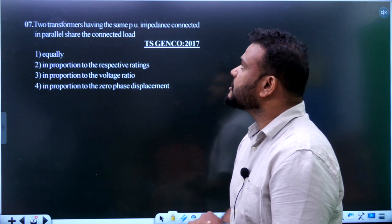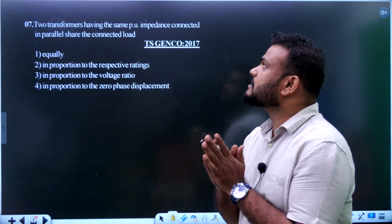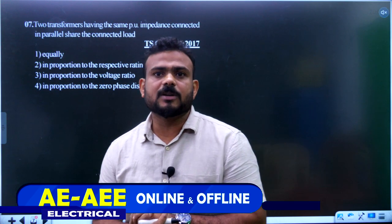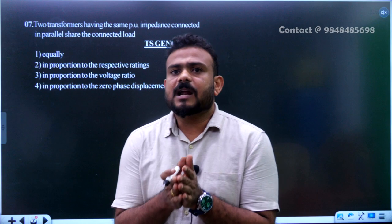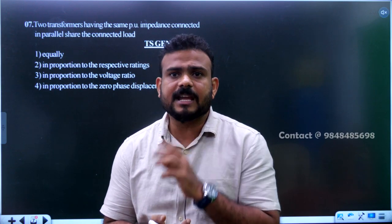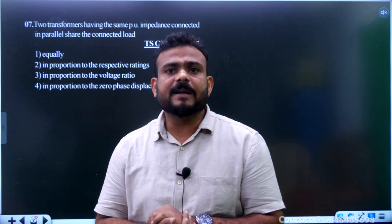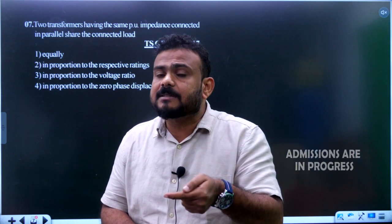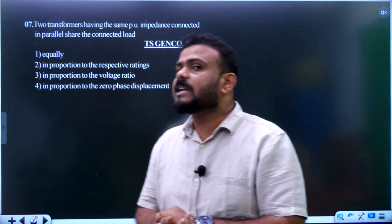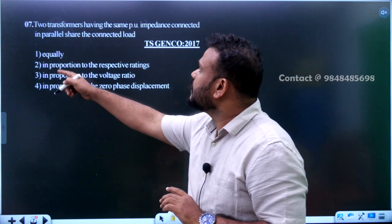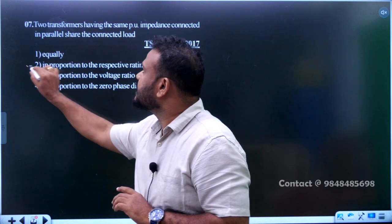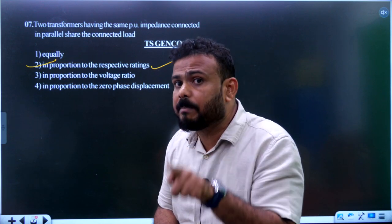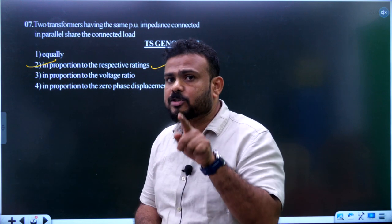Question 7: Two transformers having the same per unit impedance are connected in parallel sharing the connected load. In parallel operation of transformers, the transformer with higher KVA shares more load. The per unit impedance must be calculated with respect to their own base. When per unit impedances are equal on their own base, load sharing is proportional to their KVA ratings — this is the desirable condition.